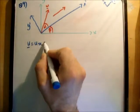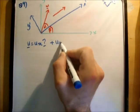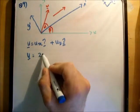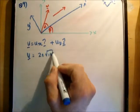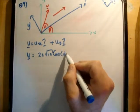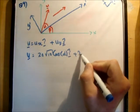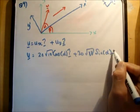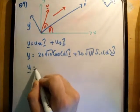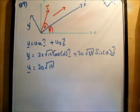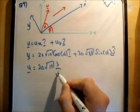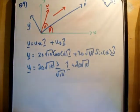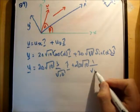So let's just resolve u equals u sub x i hat plus u sub y j hat. u is equal to 20 root 10 times the cos of alpha i hat plus 20 root 10 times the sine of alpha j hat. u is equal to 20 root 10 times 3 over root 10 i hat plus 20 root 10 times 1 over root 10 j hat.